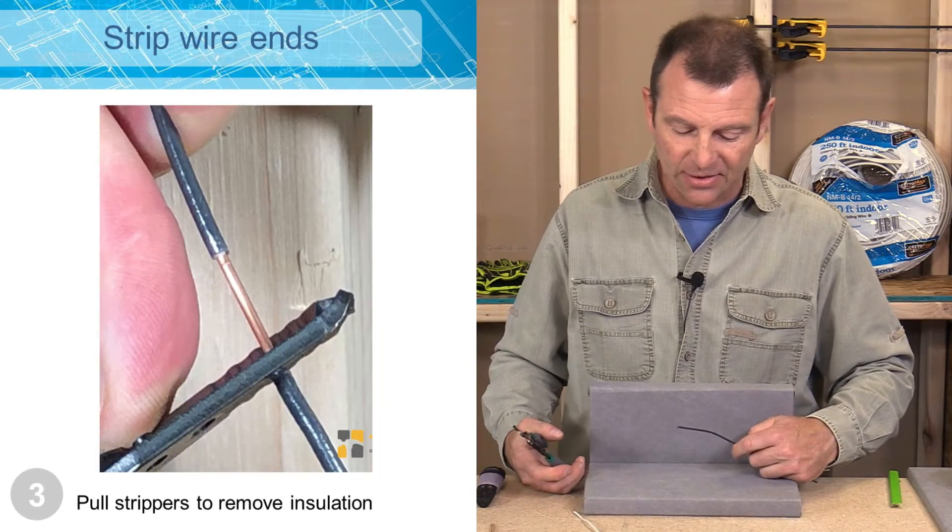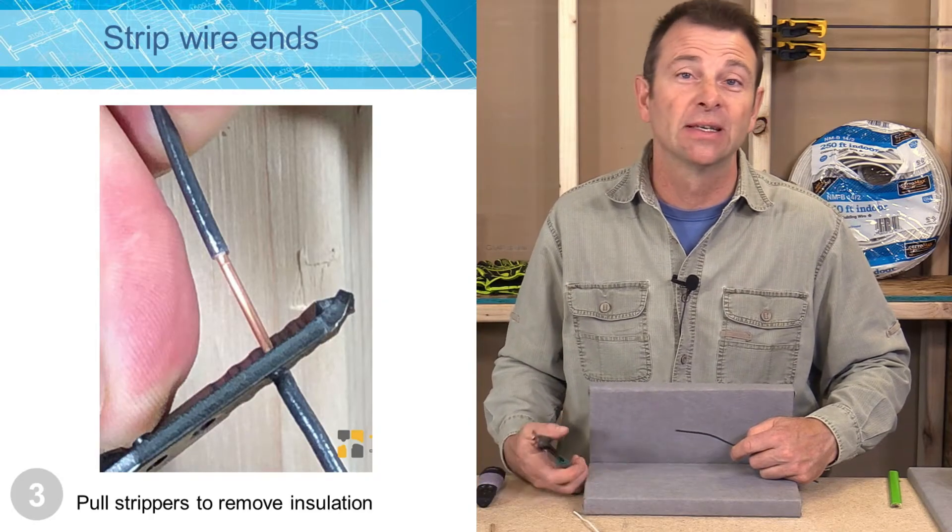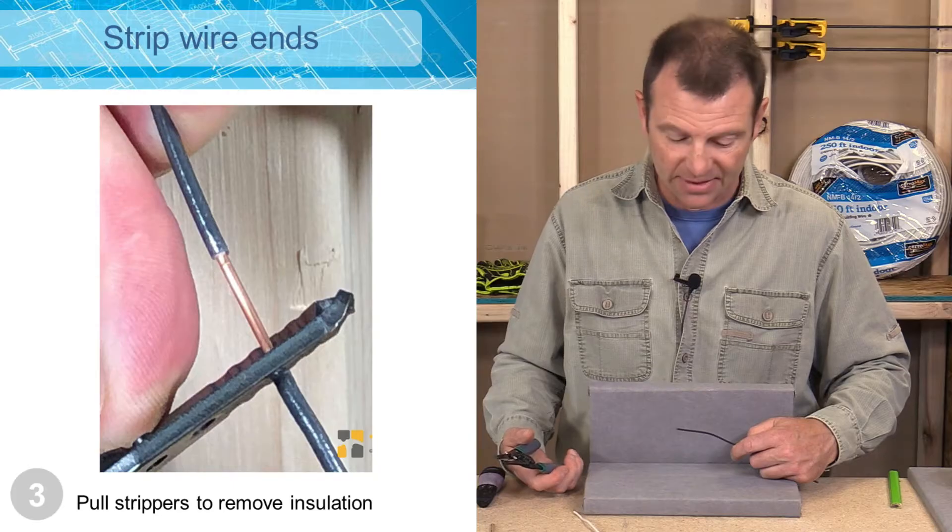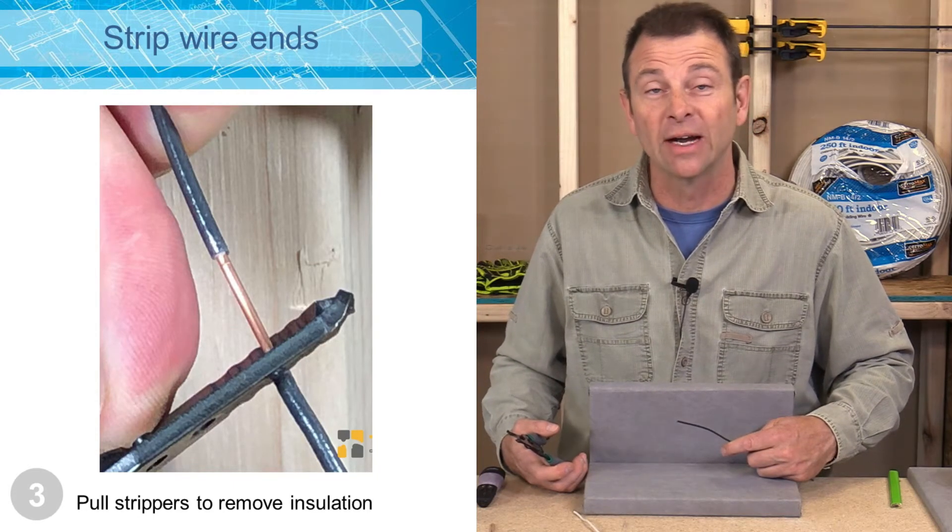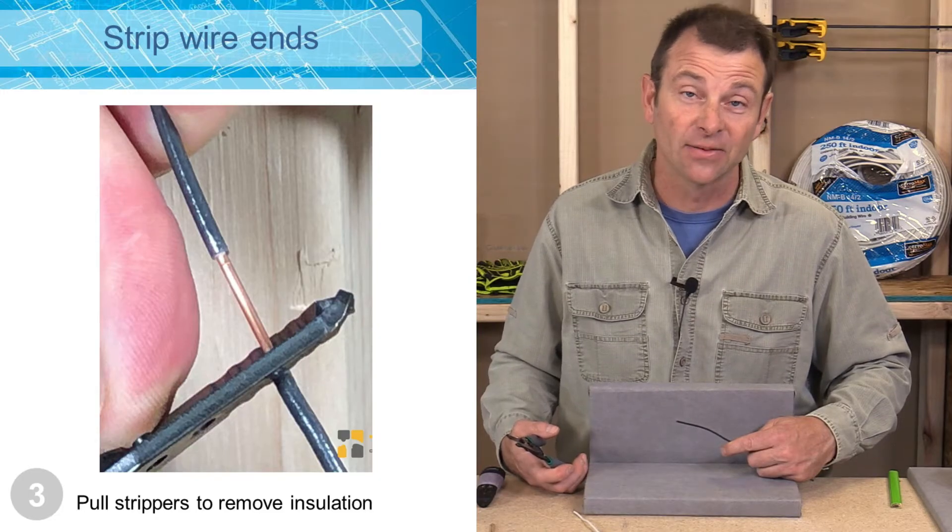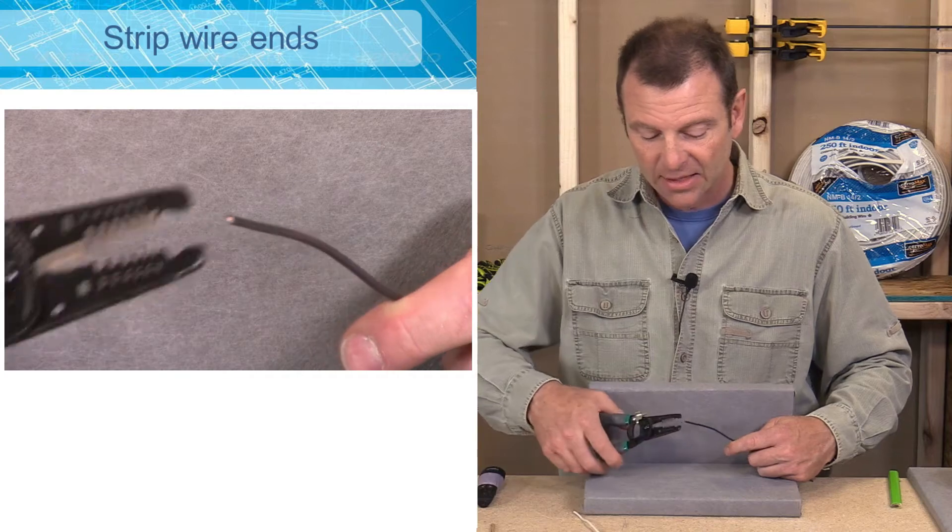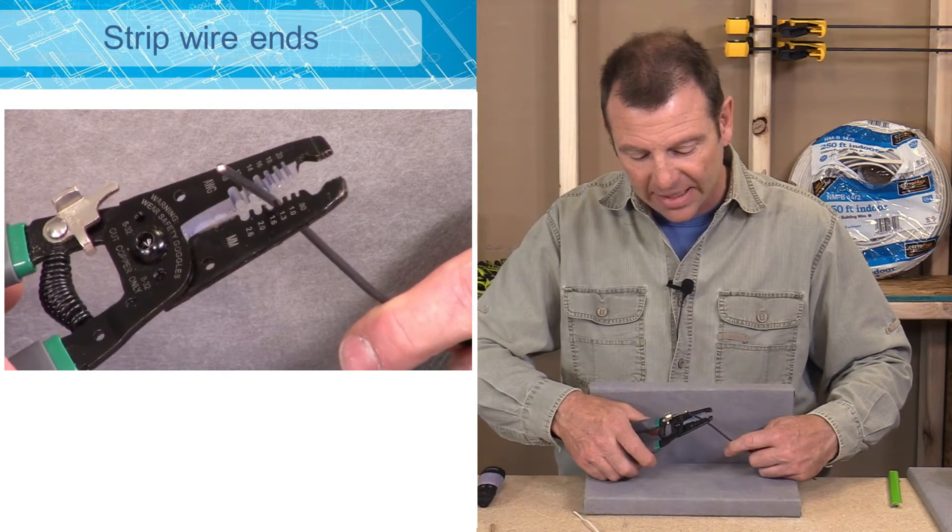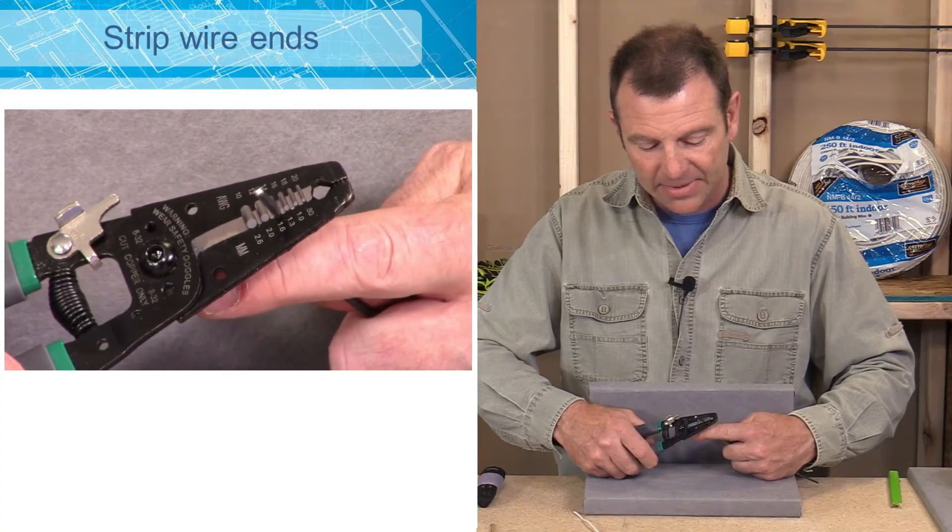So now I have a conductor. It has insulation all the way to the end. I want to expose say five eighths of the end of this conductor. So I know that I'm working with 14 gauge wire. It's important that you're able to identify the gauge of your wire so that you can then match it to your wire stripper notches. So I'm going to line up the 14 gauge notches right on my wire and I'm going to pull them tight.